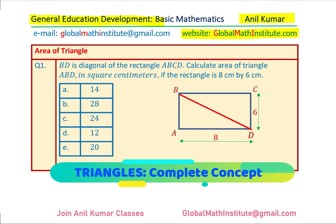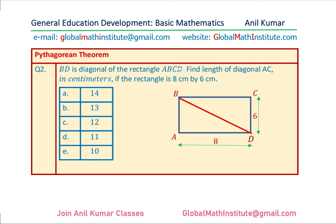Now let's go to the next problem, which is based on the Pythagorean theorem. BD is the diagonal of this rectangle — find the length of diagonal AC in centimeters if the rectangle is 8 centimeters by 6 centimeters. We have taken the same rectangle as before, and there is a specific reason for this.